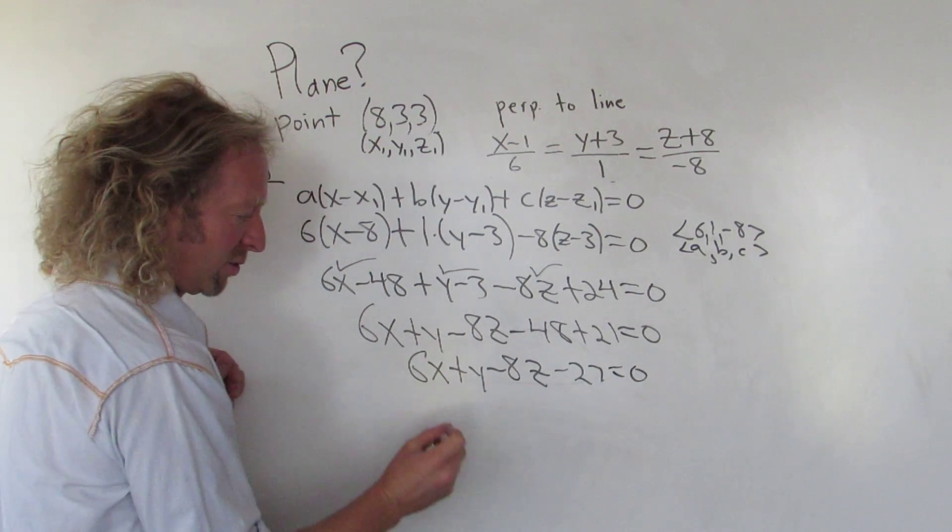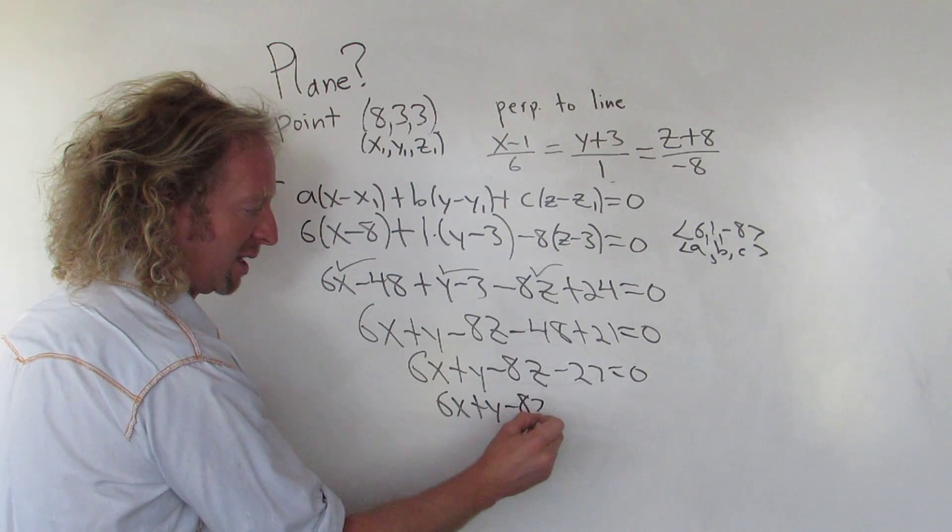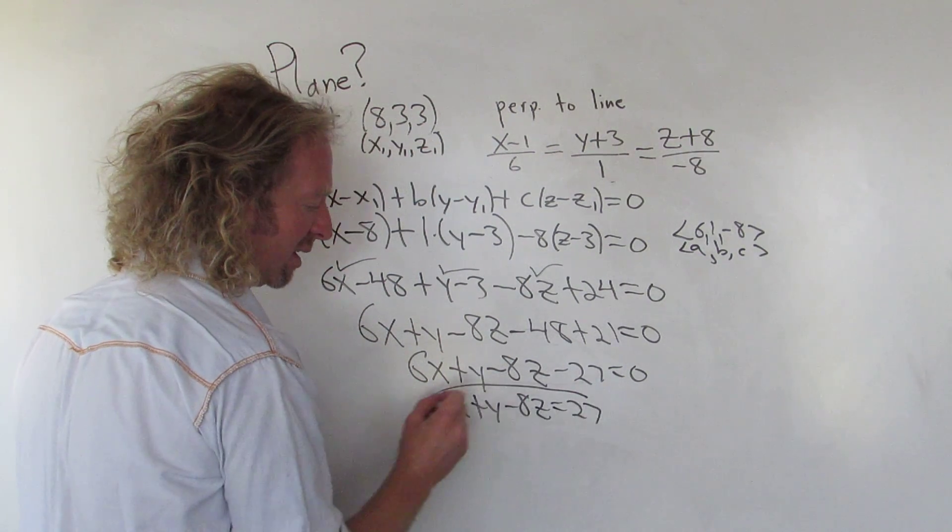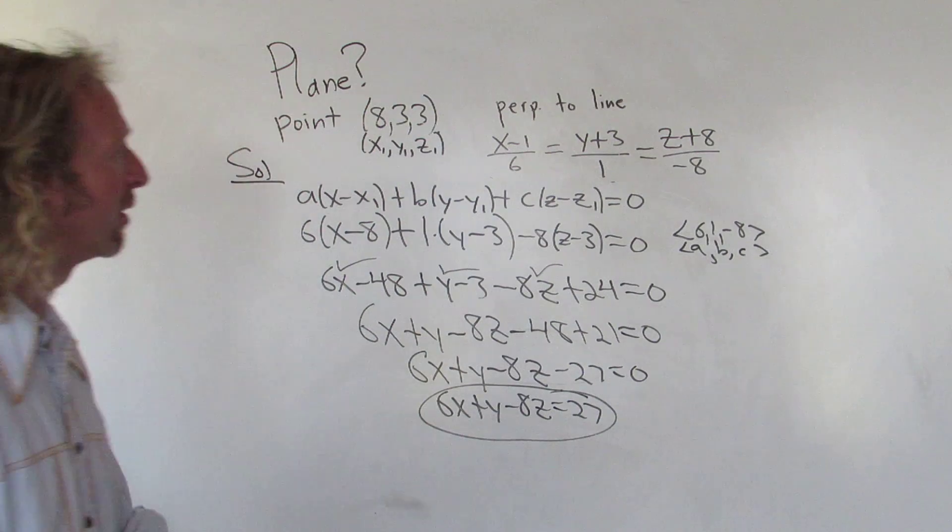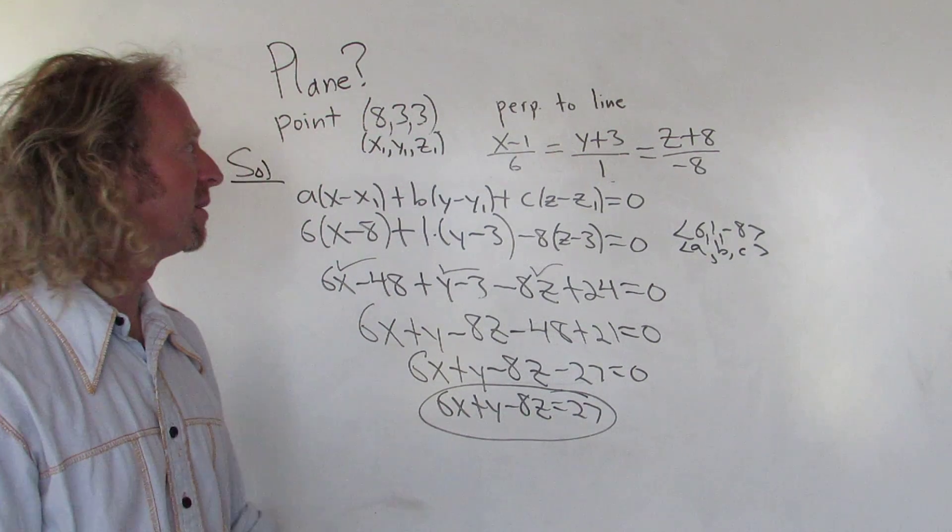To finish, just add the 27 over. So 6x plus y minus 8z equals 27. And that would be the final answer. So a little bit harder than your typical question. So I hope that made sense.